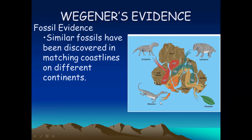Similarly, the fossils of Mesosaurus have been found both in South America and in Africa. Again, the same question: how is it possible that both these continents, being far apart, contain the same kind of fossils? That means, according to Wegener, they were once joined together, which allowed the Mesosaurus to travel from one location to another on land, without needing to swim. These fossils found in these landmasses made Wegener believe they were once part of a single landmass.